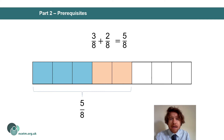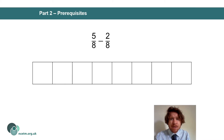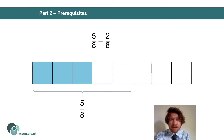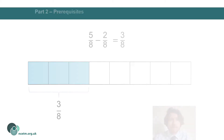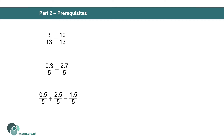Likewise for a subtraction: five-eighths take away two-eighths. We begin the problem with five-eighths and need to reduce this amount by two-eighths. Taking away two-eighths from five-eighths leaves us with three-eighths, or three lots of one-eighth. The following questions are examples I might put into starters or homeworks, just to assess that students know that when adding and subtracting fractions with the same denominator, the denominator remains the same and we simply add or subtract the numerator.